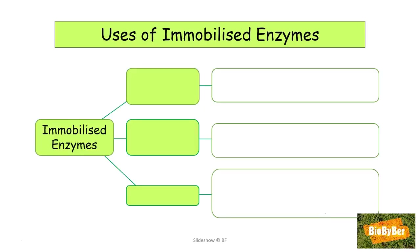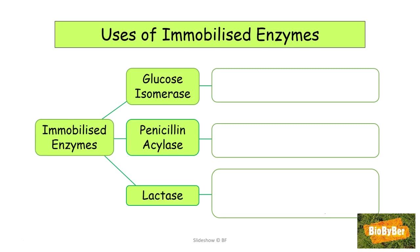What are the uses of immobilized enzymes in bioprocessing or in industry? There are three examples: glucose isomerase, penicillin acylase, and lactase. At this point, it's worth noting that when you name an enzyme, the name always ends in '-ase'. Some enzymes do not end in '-ase' because they tend to have kept their old-fashioned names.